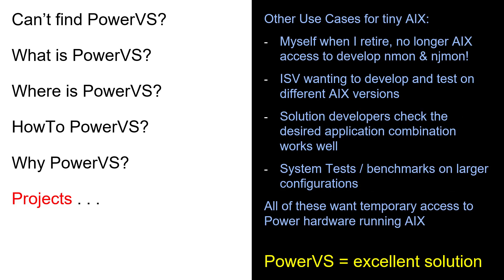There are some other use cases for tiny copies of AIX. I will retire in a few years and no longer have access to IBM computers to develop my performance tools NMon and NJMon - well, I can use PowerVS at just £2 a day. ISVs might want to develop or check that their applications run nicely on AIX. Solution designers might want to try a combination of applications to make sure they work well together. Maybe you just want to do some quick system testing before something goes live, or run a benchmark on a bigger machine than you have. All of these require temporary access to Power hardware running AIX, and PowerVS is an excellent solution.